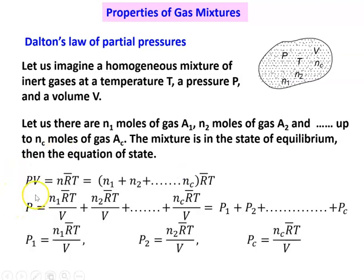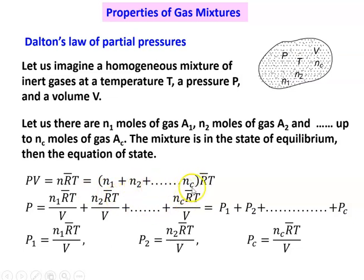We write one perfect gas equation: PV = NR̄T. Here, P is the pressure of the gaseous mixture, V is the volume of the gaseous mixture, N is the total number of moles, and R̄ is the universal gas constant. The general expression is N = N1 + N2 + ... + Nc.